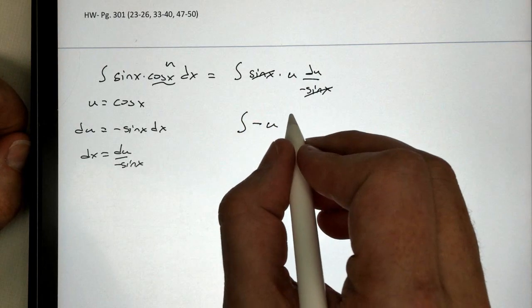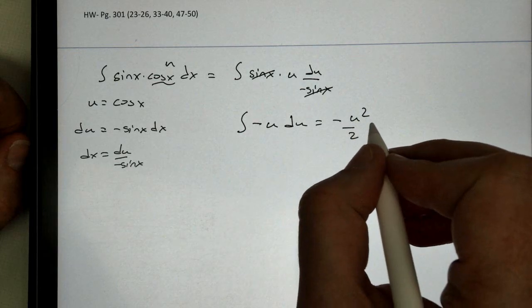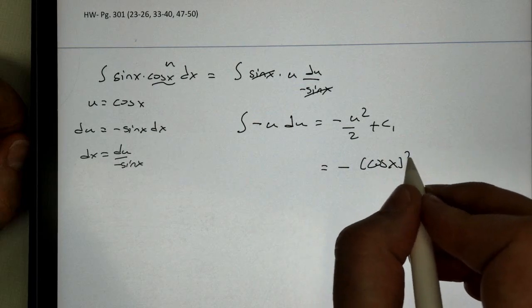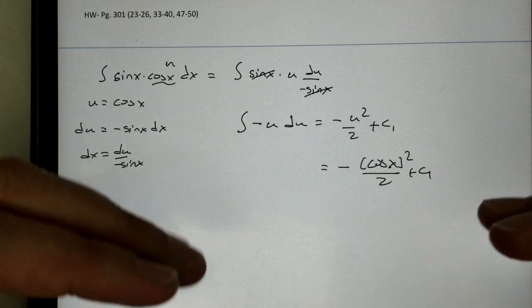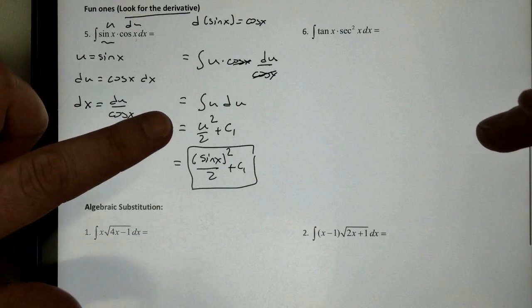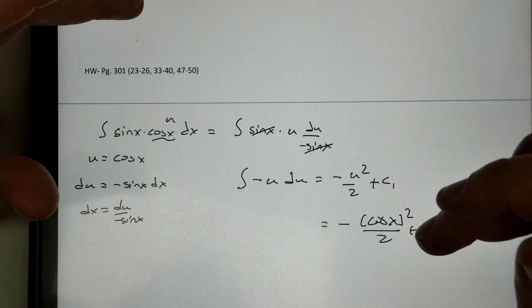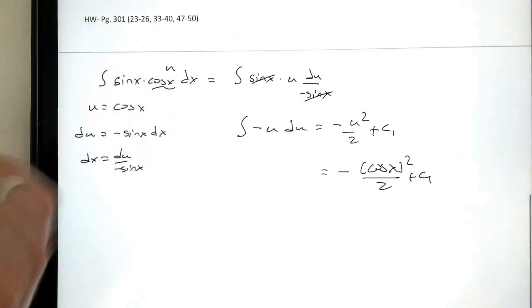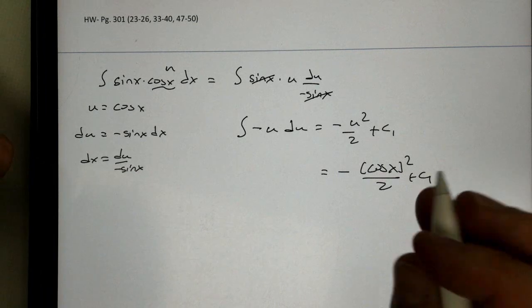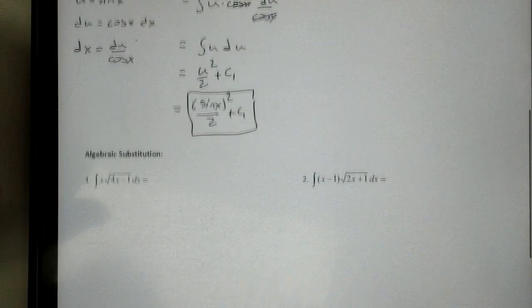And we'll end up with negative u du, which gives us negative u squared over 2 plus c1. Or negative cosine of x squared over 2 plus c1. Now, if you notice, this isn't the exact same as our previous answer. However, these are equivalent to each other. We can show this by using the Pythagorean theorem, which will be a proof we might show later on. You can use the Pythagorean theorem to show that these two are indeed equal to each other.